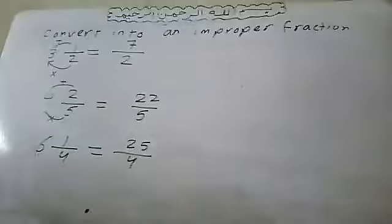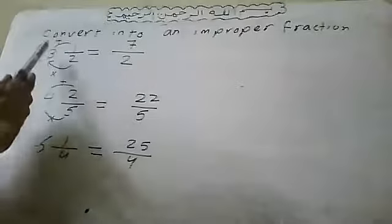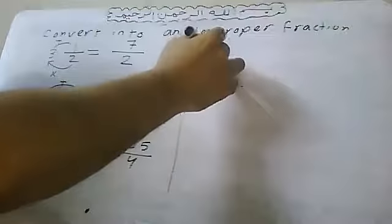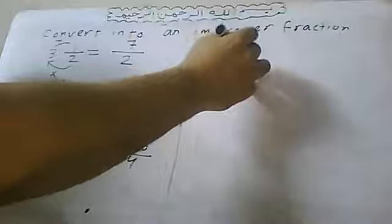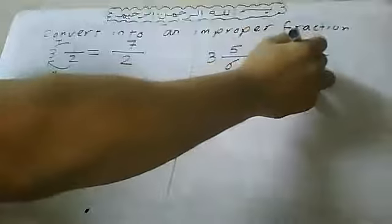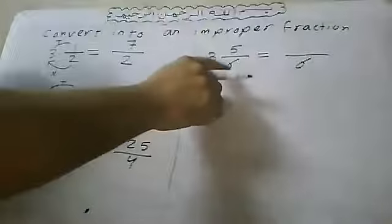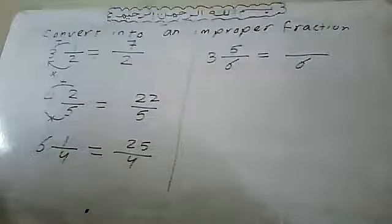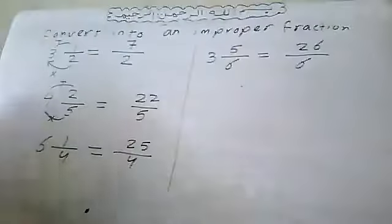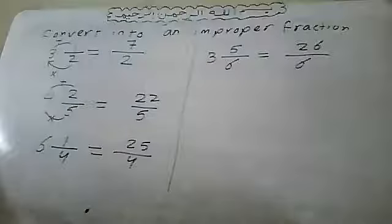Let's make sure everyone understands how to convert from a mixed number to an improper fraction. Another example: three and five over six. First write six, then six times three equals eighteen — wait, six times three is actually eighteen, not twenty-one. Then eighteen plus five equals twenty-three over six.